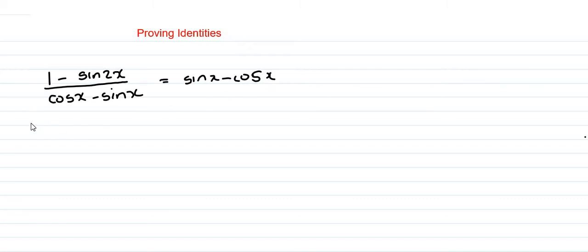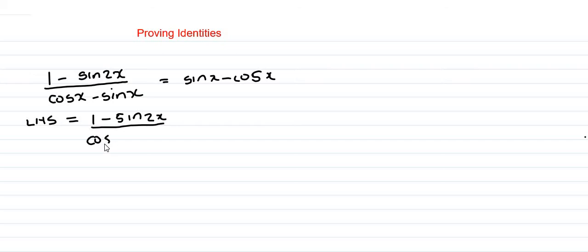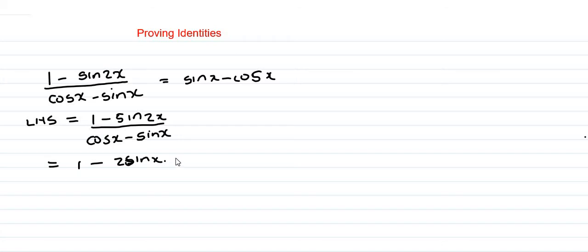Our left-hand side is the more complicated side, so it is the side that we simplify further. So we have one minus sin 2x, all over cos x minus sine x. In the numerator, how do we expand sin 2x? It becomes two sine x cos x. All over cos x minus sine x.